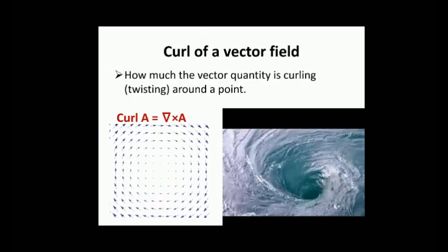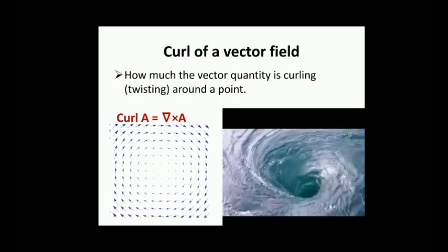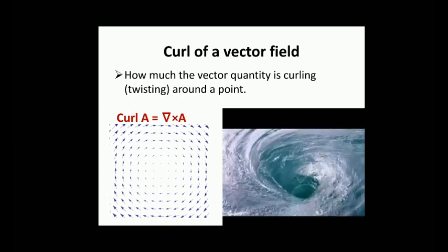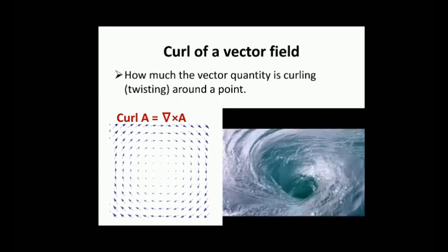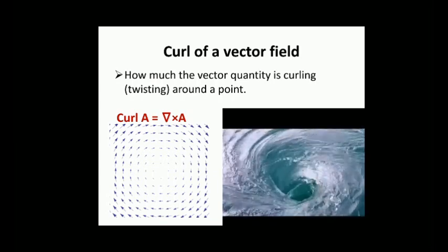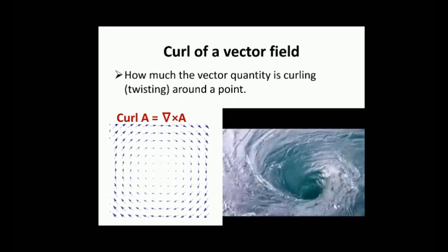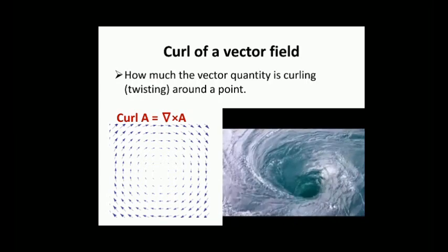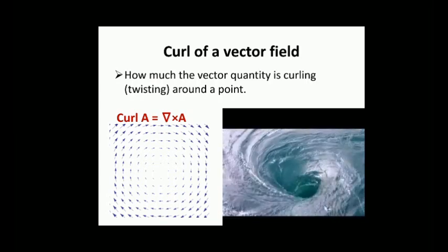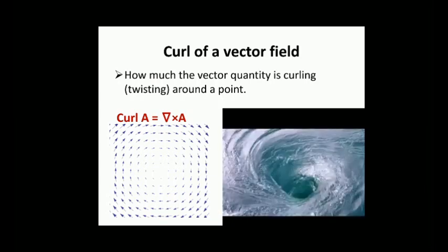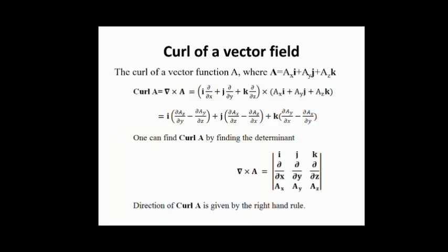Next, curl of a vector field. In vector calculus, the curl is a vector operator that describes the infinitesimal rotation of a vector field in three-dimensional space. At every point in the field, the curl of that point is represented by a vector. Curl gives an idea of how much the vector quantity is curling or twisting around a point.